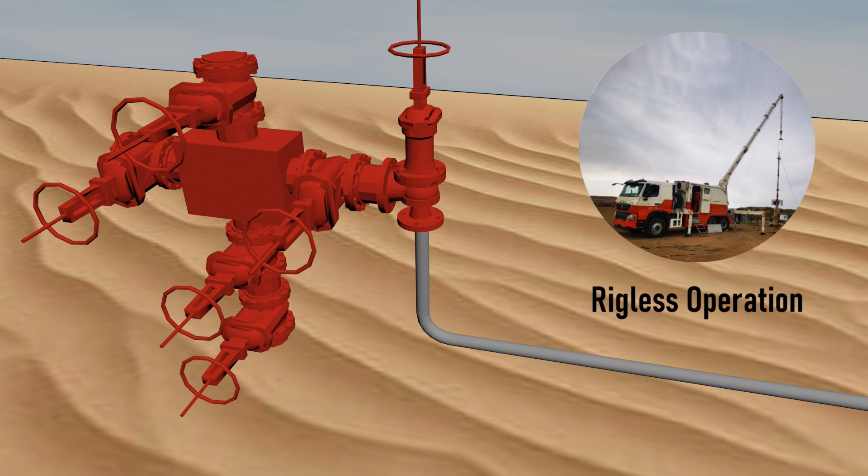Instead, well interventions require simpler means such as slick line, electric line, and coil tubing.